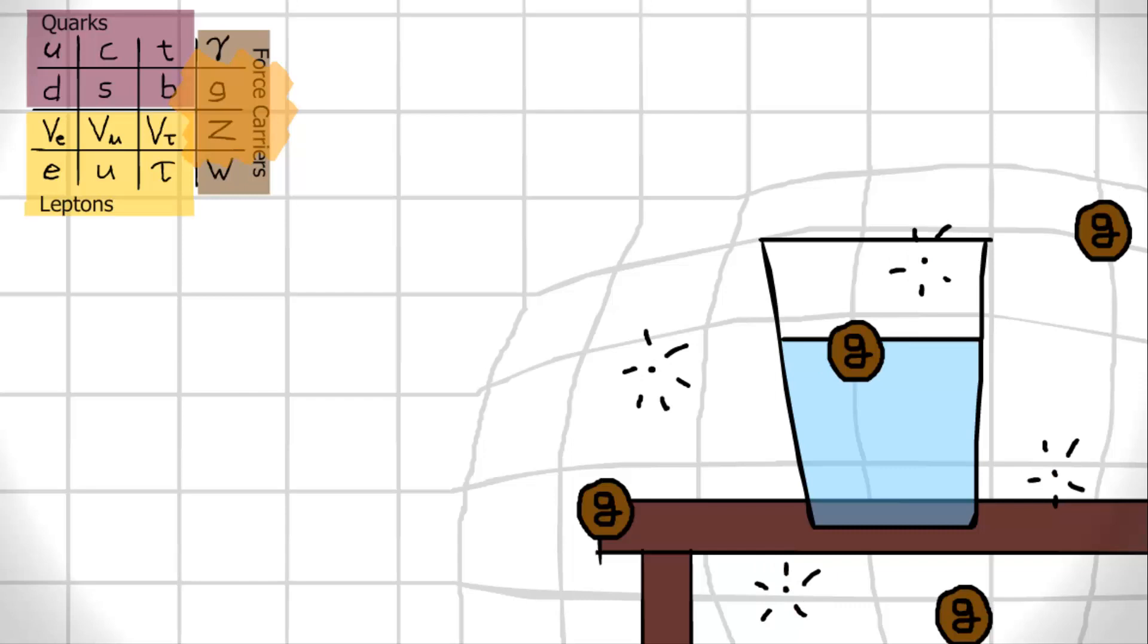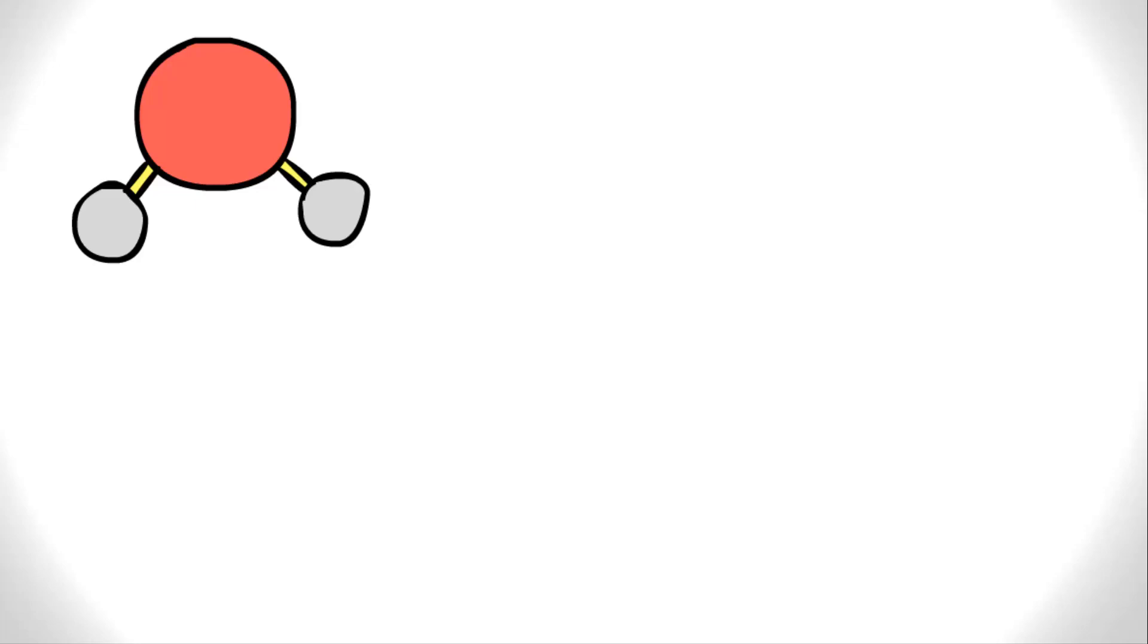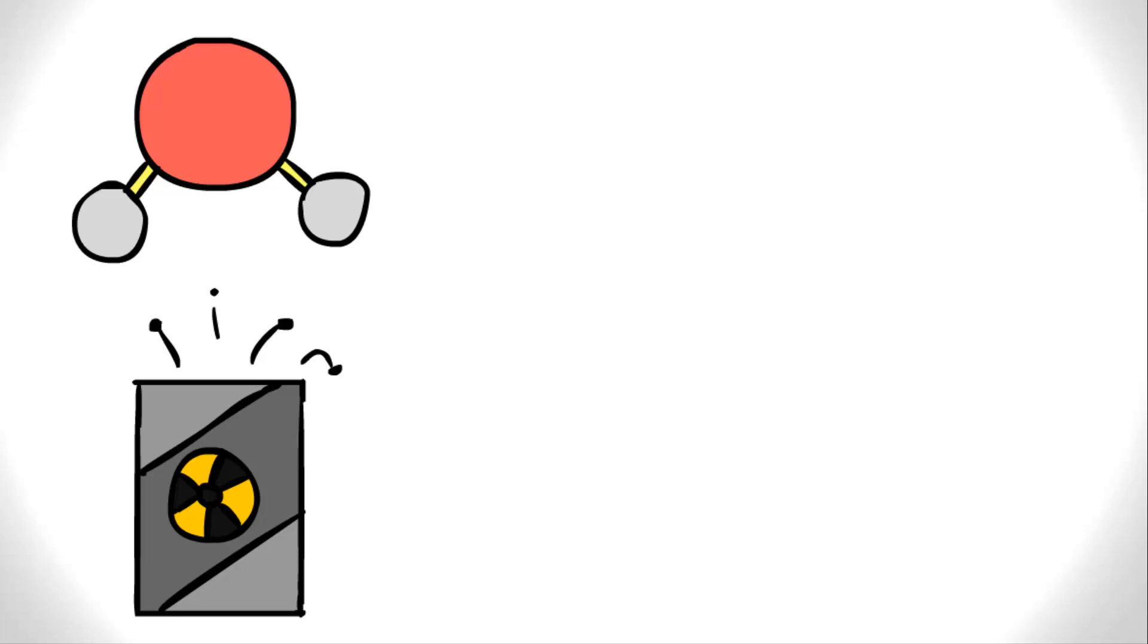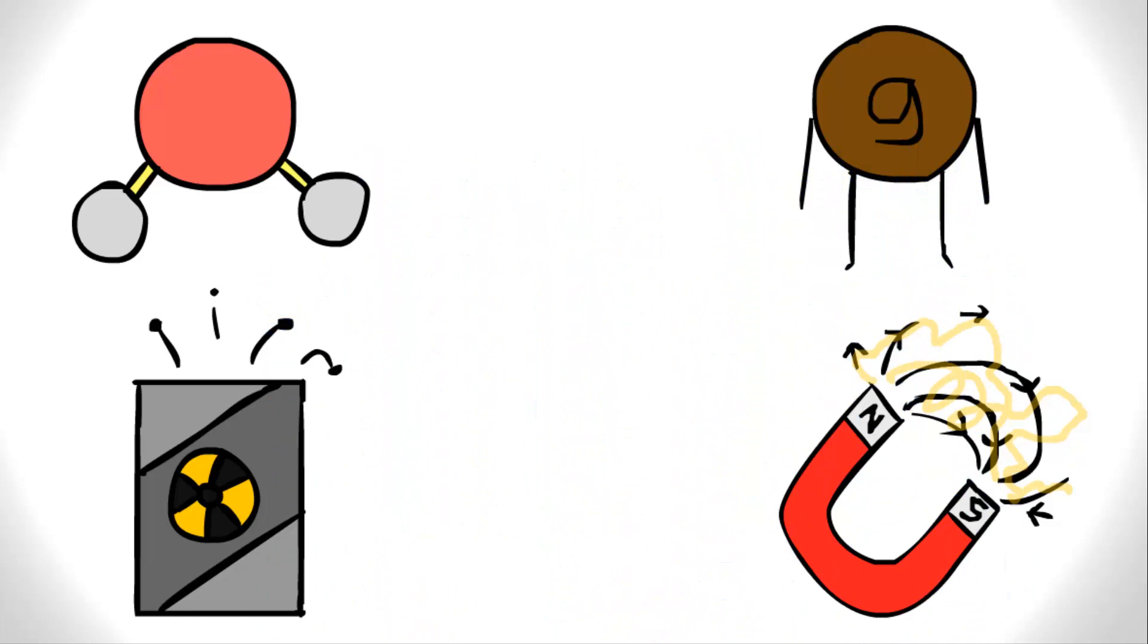The interactions can be summed up by the following four categories: the strong interaction, the force which holds an atom together; the weak interaction, the force which allows for particle decay; gravity, the force within the gravitational field; and electromagnetism, the force within the electromagnetic field.